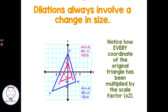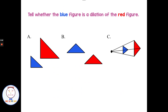Every coordinate of the original triangle has been multiplied by the scale factor of 2. You're going to have growth if you have a scale factor greater than 1. Now let's tell whether the blue figure is a dilation of the red figure.